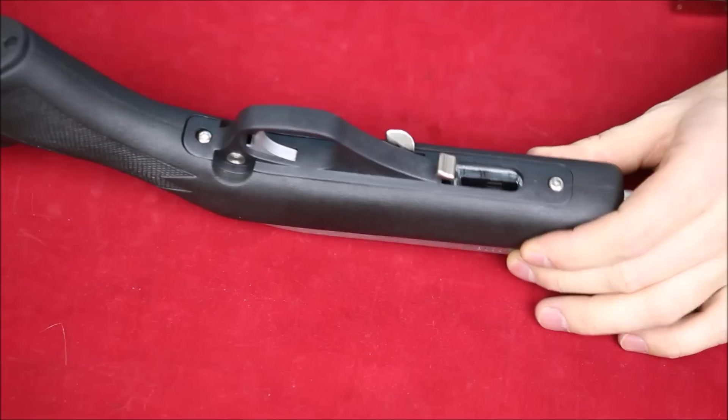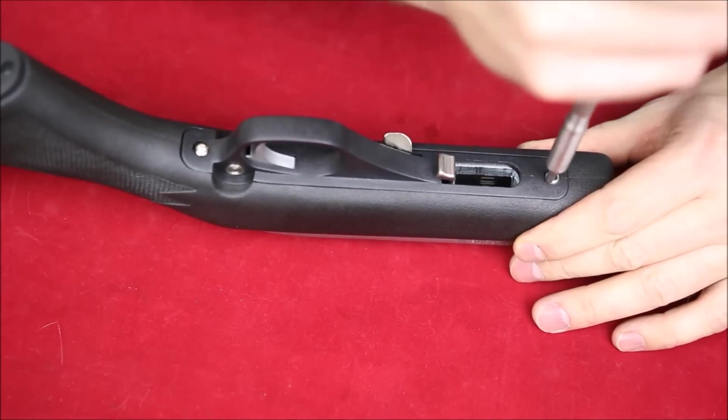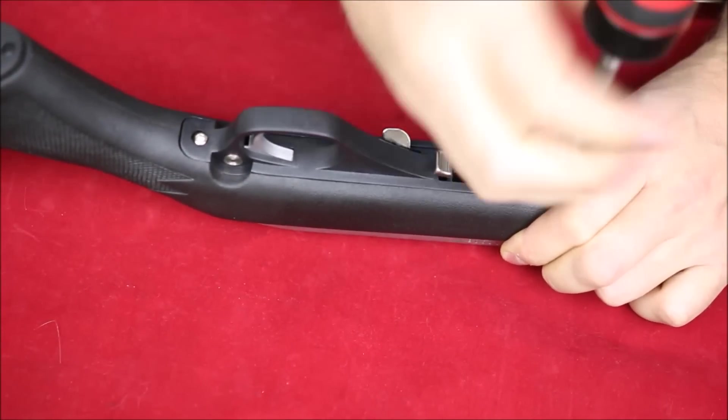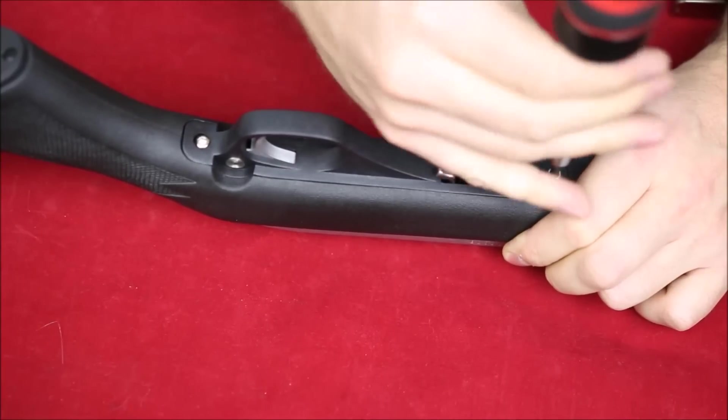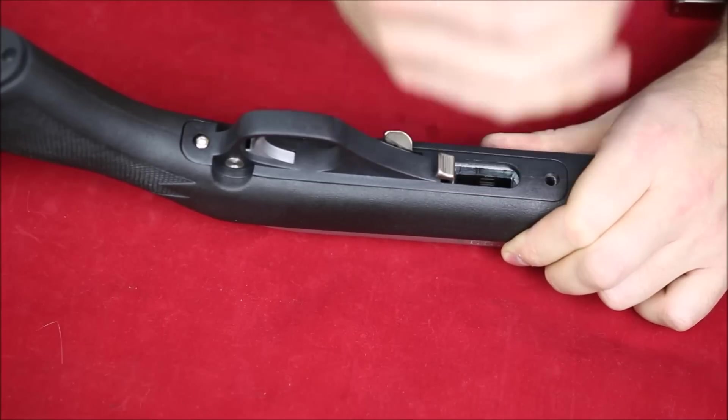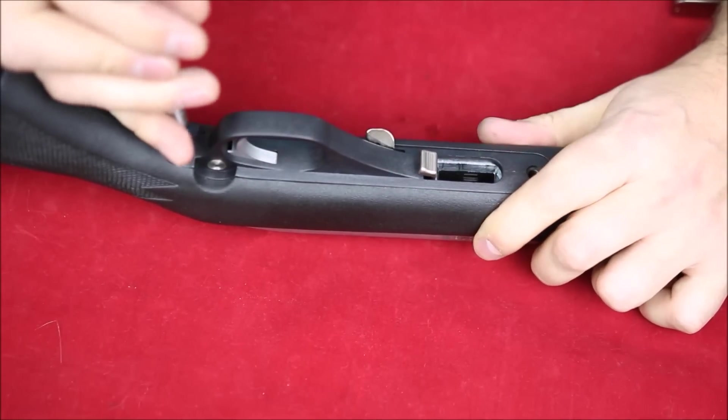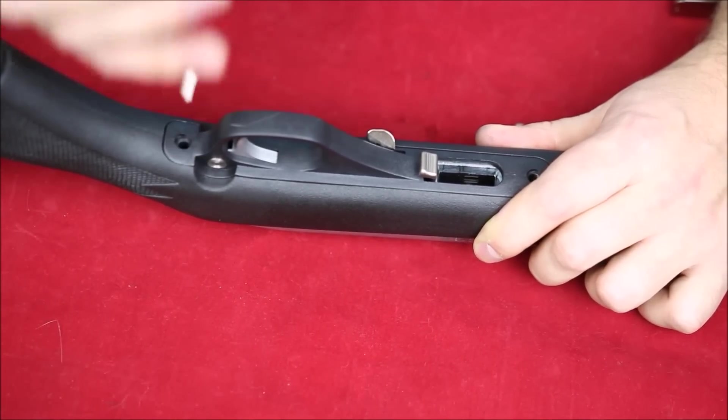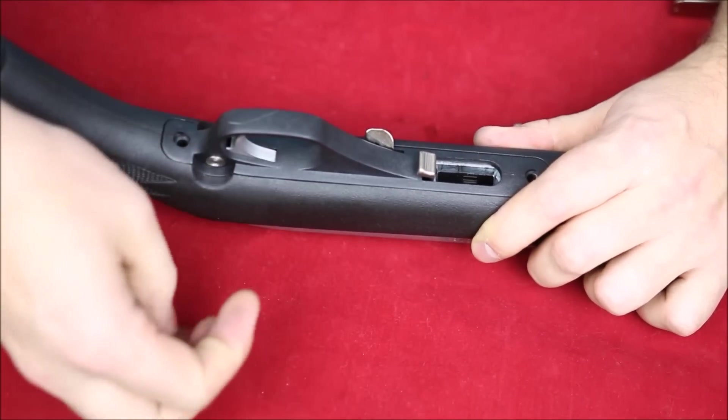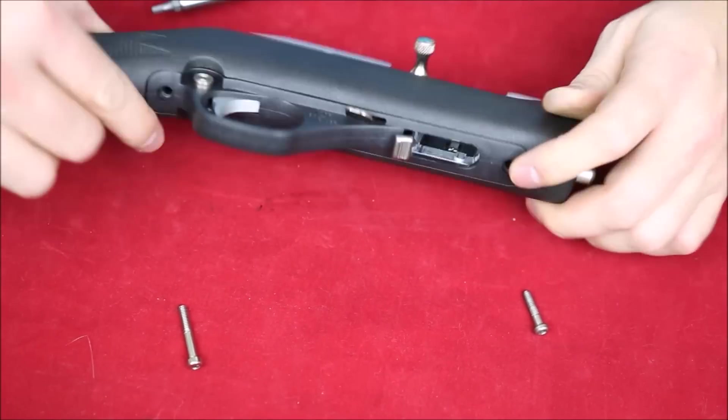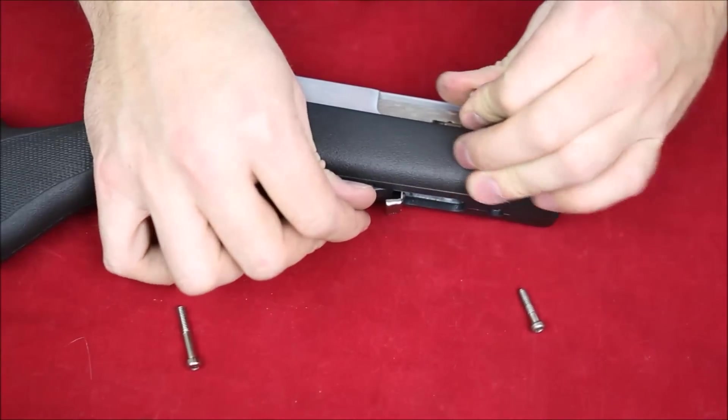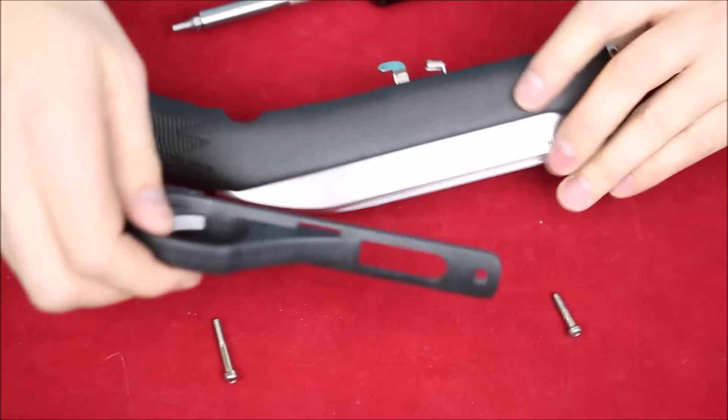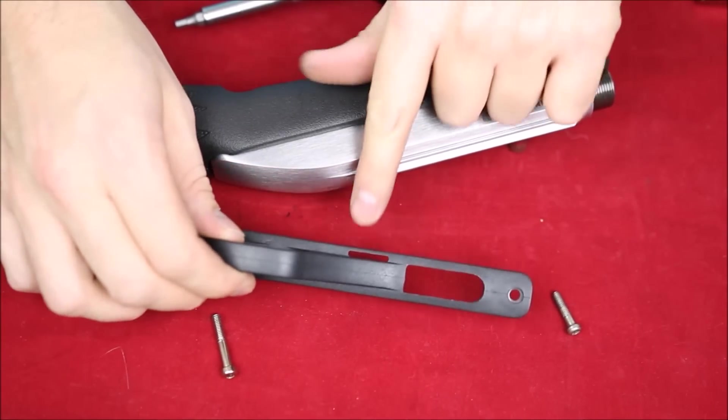For disassembly, there's two action screws, one at the front here and then one at the rear, a bit of an odd size, so you might have to go through your tickle trunk of allen keys to find the correct head. Once those screws are off, you're going to need to drop the bolt down to give you a little bit more room. You should be able to very carefully pull this off.